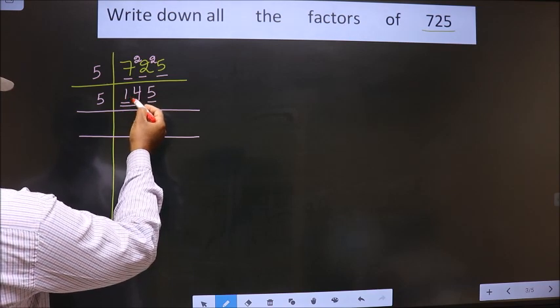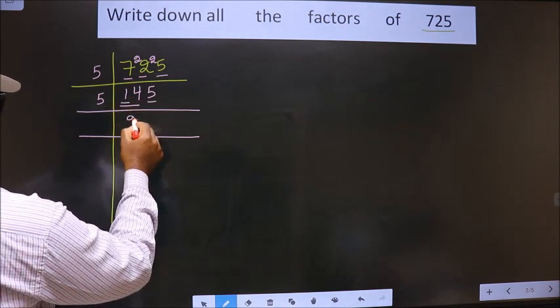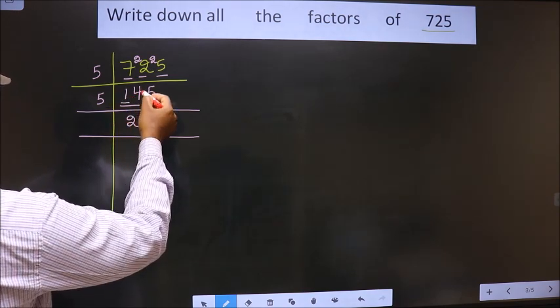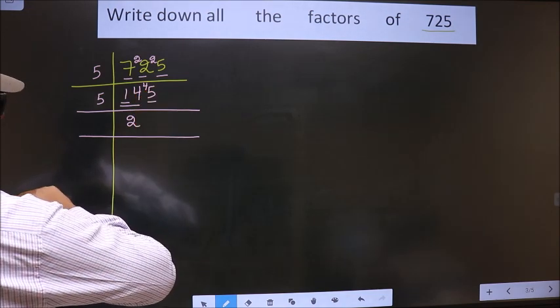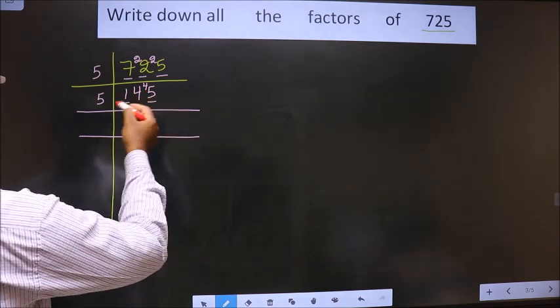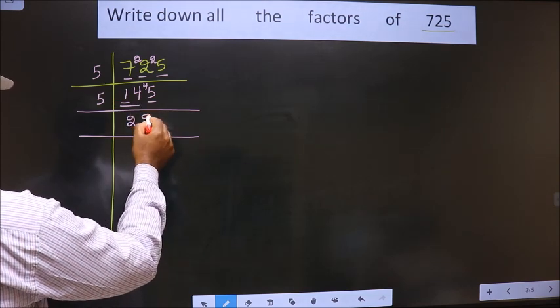A number close to 14 in the five table is 5 times 2 is 10. 14 minus 10 is 4. 4 carried forward making it 45. Now, when do we get 45 in the five table? 5 times 9 is 45.